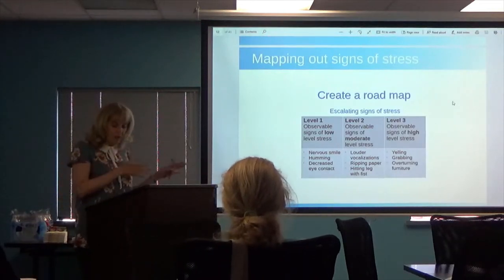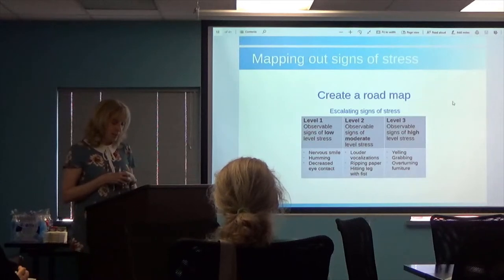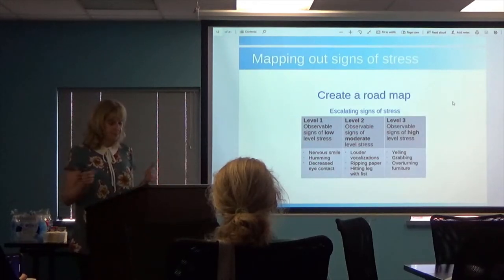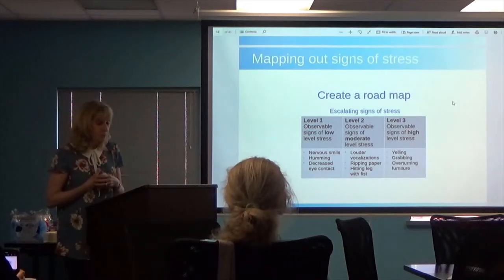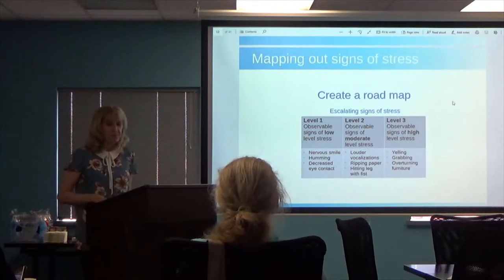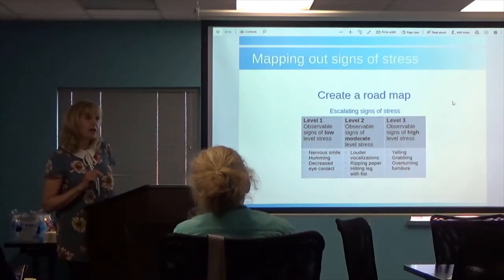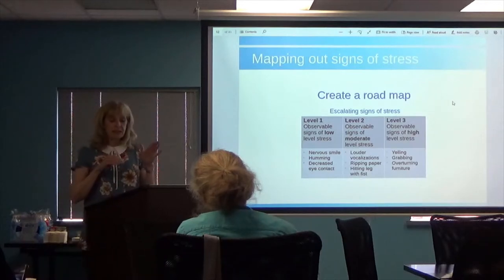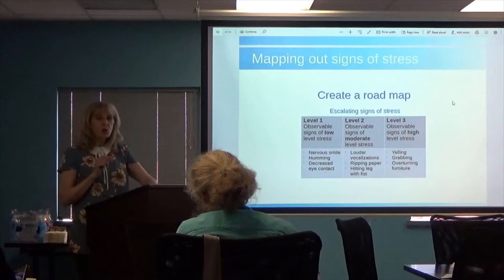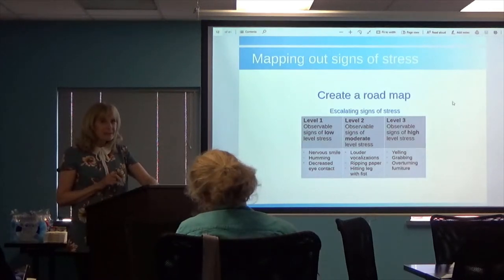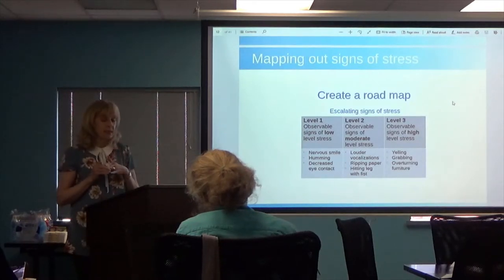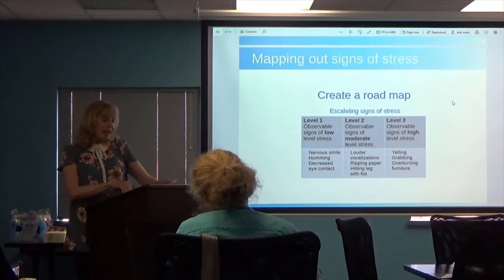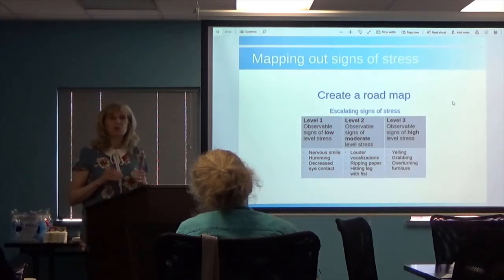So we've defined aggression, talked about stressors, the impact on caregivers, and the body's response. Now the plan: first, make a list of things you think are stressing the individual. Next, create a road map of what stress looks like for the person you care for, categorized into level one — low signs of stress, level two — moderate, and level three — high.